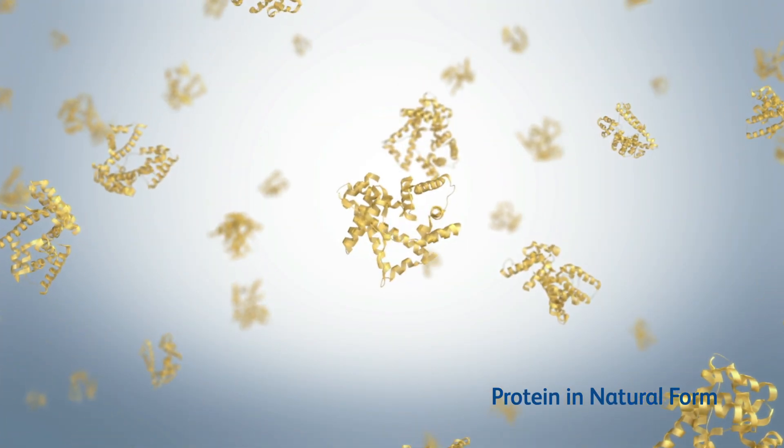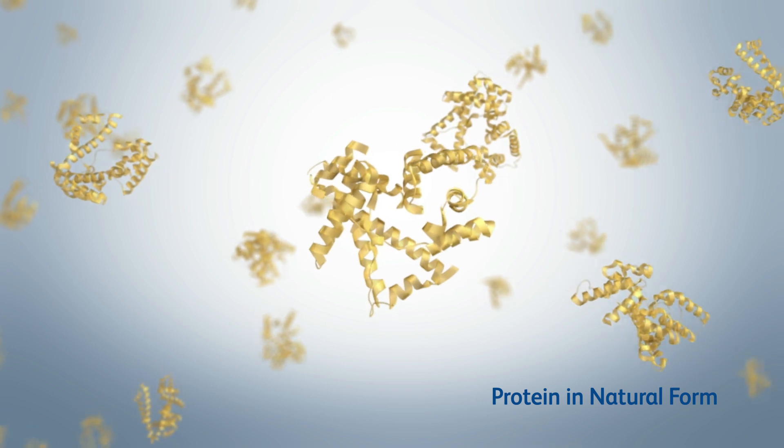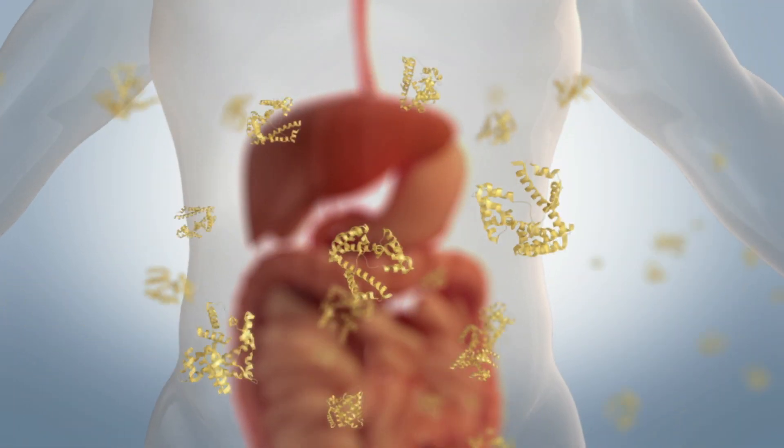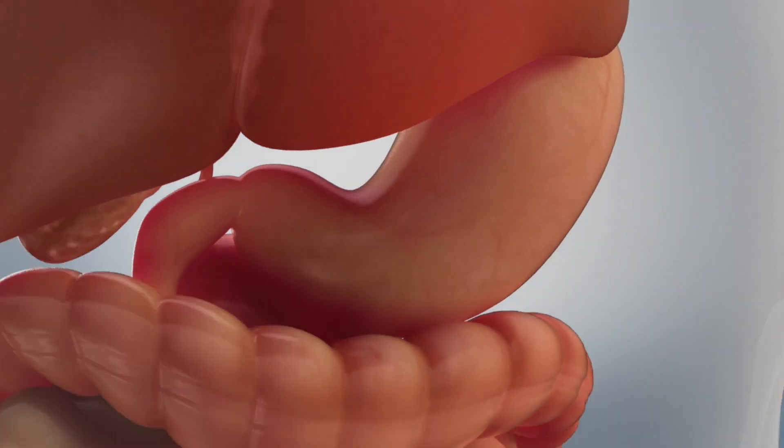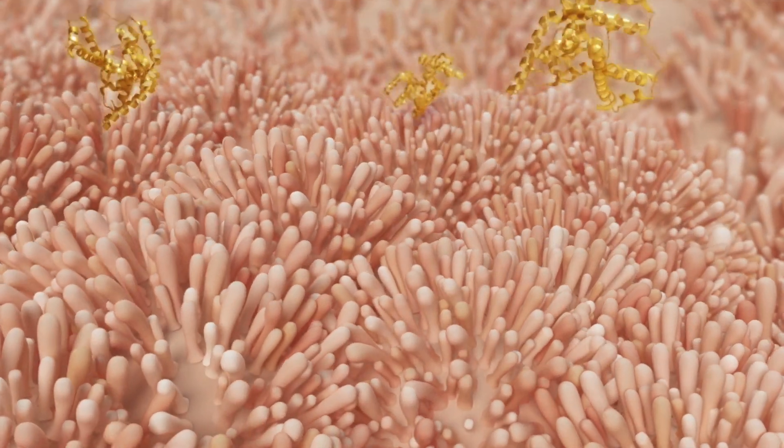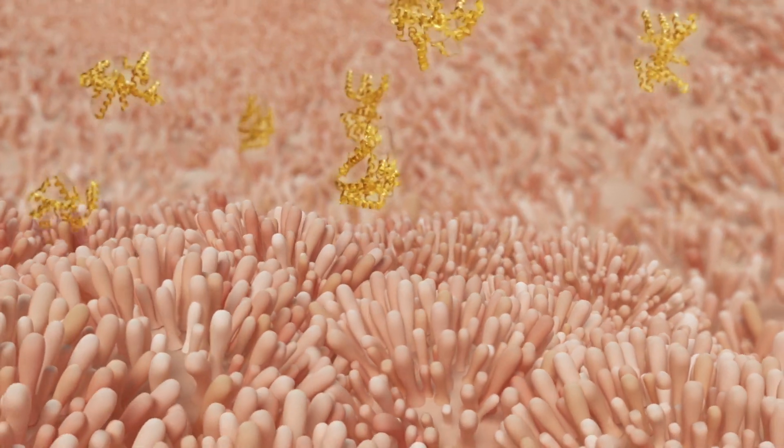This is how a protein in its native structure looks like. When we consume protein, the proteins get digested in the stomach. The digested proteins are then absorbed in the intestines.